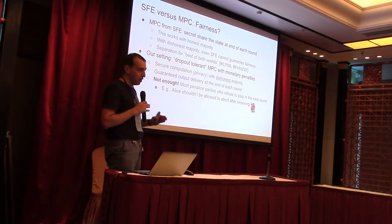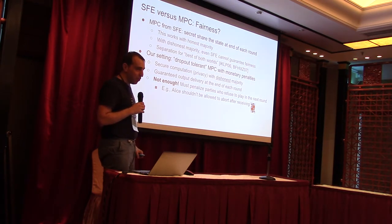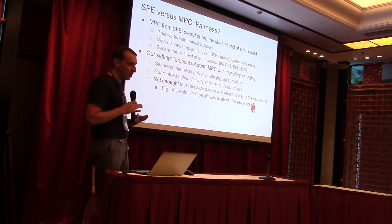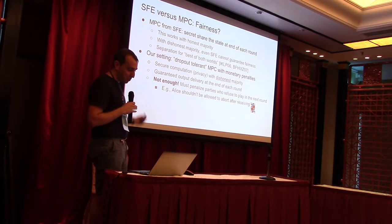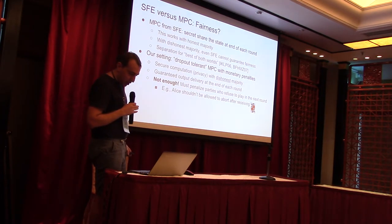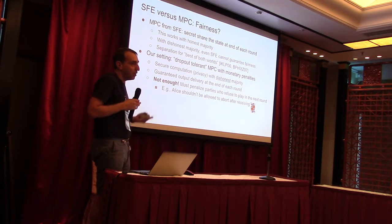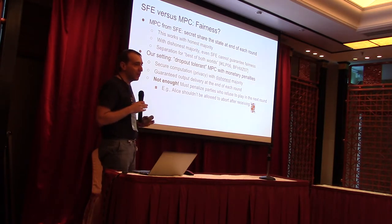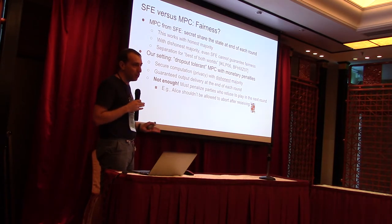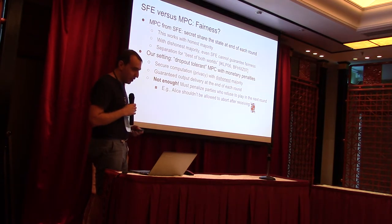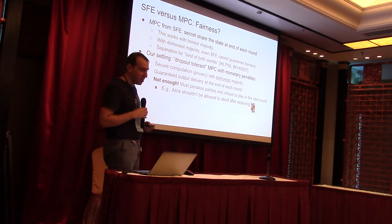After each round of computation ends, all parties are guaranteed to get the output of the round. But even this is not enough — what we really want is to force parties to play the next round. For example, if the last round finished and Alice received the Queen of Spades and doesn't like her card, we shouldn't allow Alice to just abort. We must force Alice to continue to play or otherwise pay a penalty. We call this a dropout-tolerant secure multi-party computation with penalties.